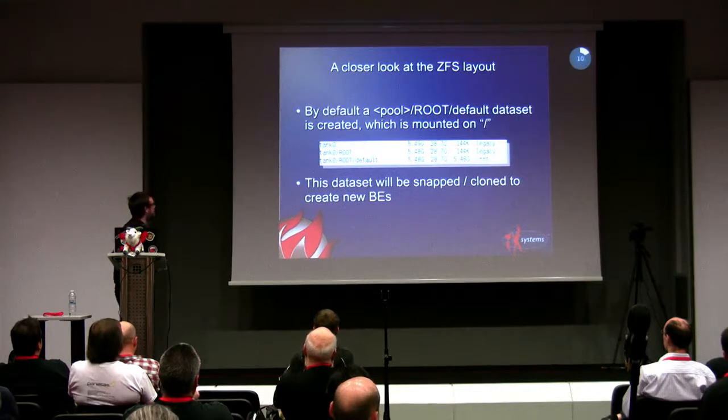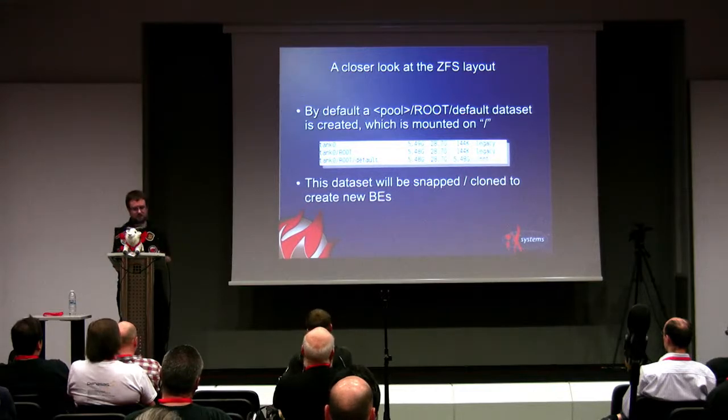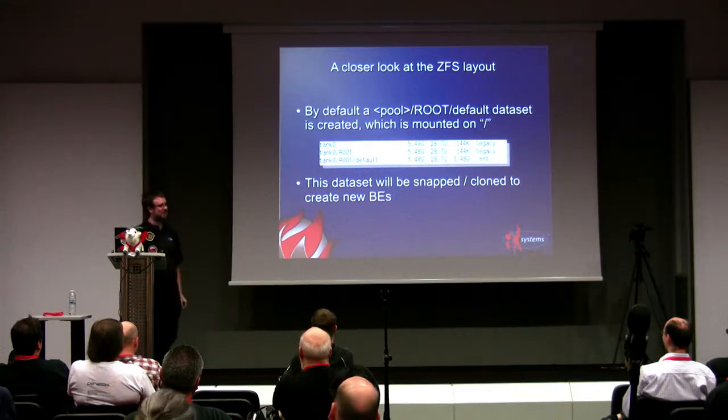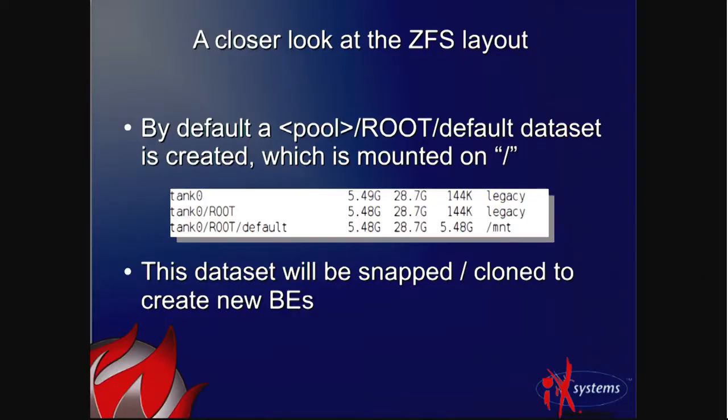How do we do this magic? We start with a special ZFS layout. When we do the system installation, we create our Zpool as 'tank' — I love that term — and then we create a special ROOT dataset in all uppercase. Within there, your boot environments will be listed. The first dataset called 'default' is what's going to be snapped and cloned to create new boot environments.